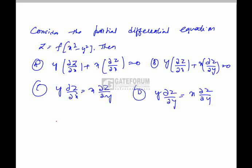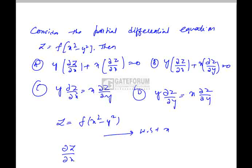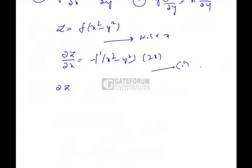We have to find the partial differential equation of the function z equals f of x square minus y square. Let us differentiate this z with respect to x partially. So, it is del z by del x. Differentiation of f of x is f dash of x and the differentiation of x square minus y square is 2x. Let it be equation 1. Now, we will differentiate z with respect to y partially. So, it is f dash of x square minus y square into differentiation is minus 2y which is equation 2.